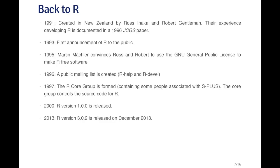So what is R about? R is a relatively recent development. In 1991 it was created in New Zealand by two gentlemen named Ross Ihaka and Robert Gentleman. They talked about their experience developing R in a paper published in 1996 in the Journal of Computational and Graphical Statistics. In 1993, the first announcement of R was made to the public. In 1995, Martin Meckler convinced Ross and Robert to license R under the GNU General Public Library, which made R what we call free software.